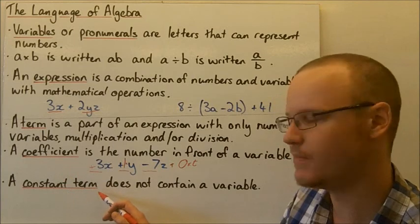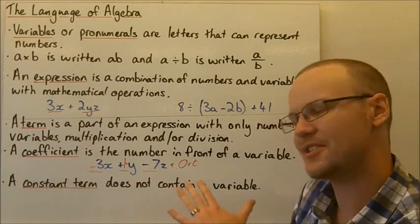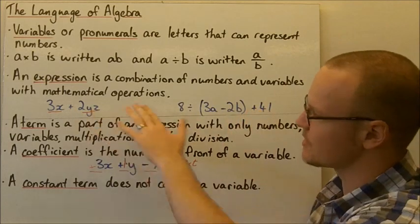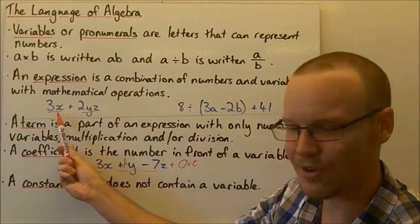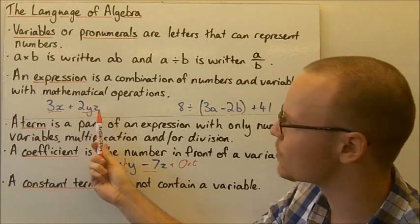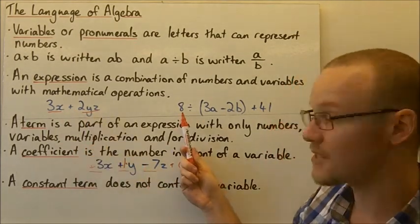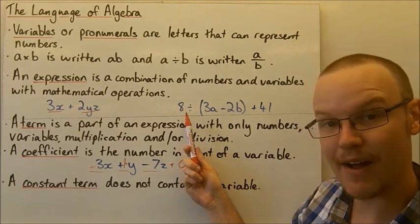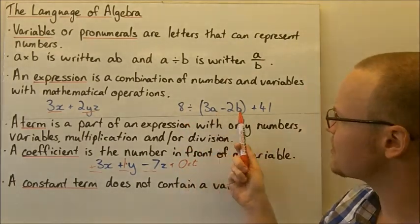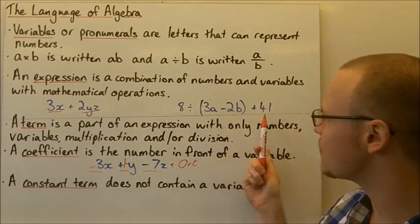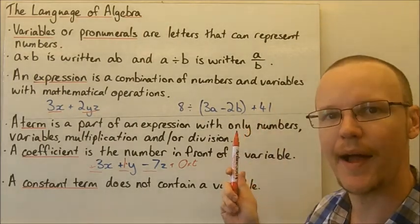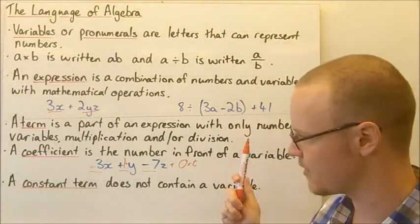A constant term doesn't contain a variable — it's only a number. Looking at our expressions, 3x is not a constant term because it has a variable x, and 2yz is not a constant term because it has y and z. However, 8 would be considered a constant term because it doesn't have any variable attached to it. Similarly, 41 is a constant term because there's no variable or pronumeral attached to it.